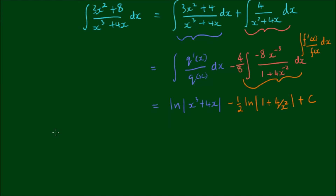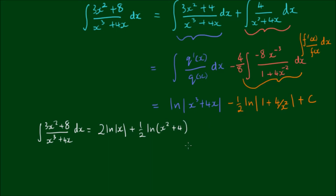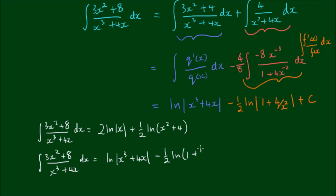Now let's compare to make sure we're getting the right result. With partial fractions we got: 2·log(x) + ½·log(x² + 4). For the current method we got: log(x³ + 4x) − ½·log(1 + 4/x²). Note I've used parentheses because x² + 4 and 1 + 4/x² can never be negative for real values of x, so parentheses are fine here.